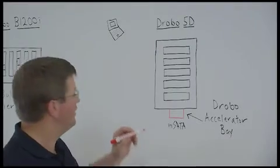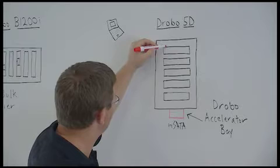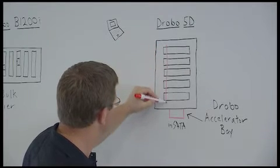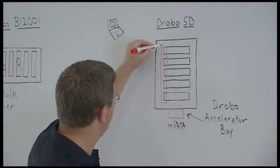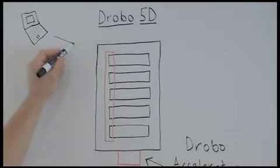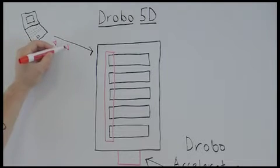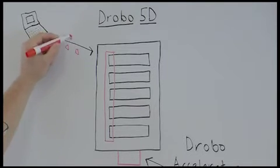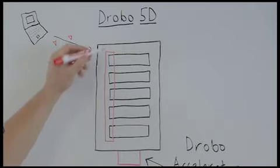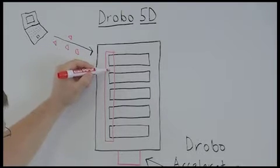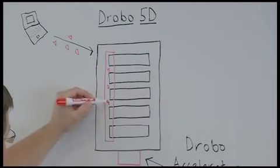So the way it works is a little bit of space is carved off the top of the drives. Let's just say it's just a little bit. As writes come into the Drobo, just like with the B1200i, if those writes are small transactional in nature, they will go on to this mirrored sliver of space off the top of the drives.